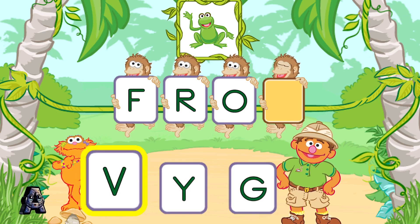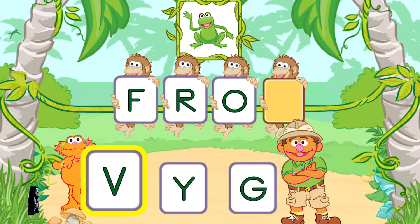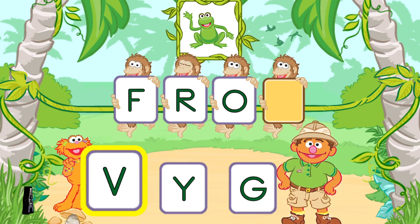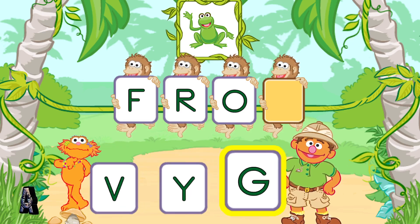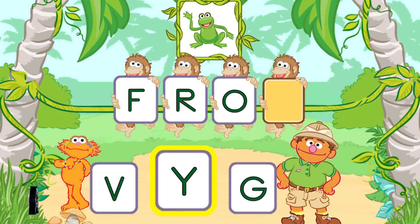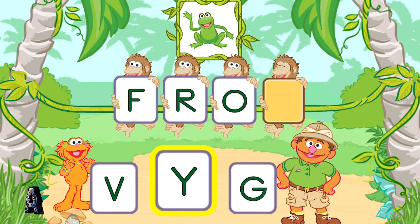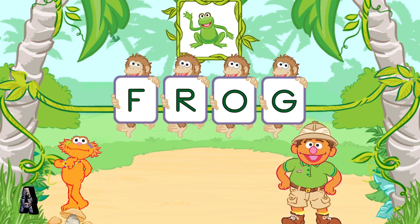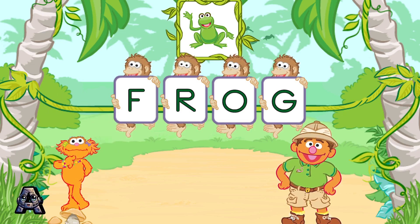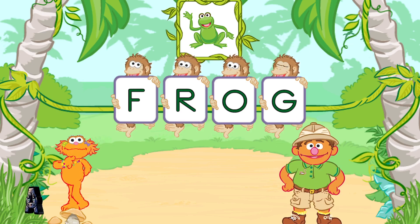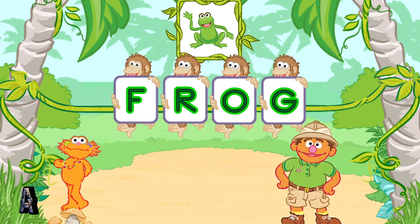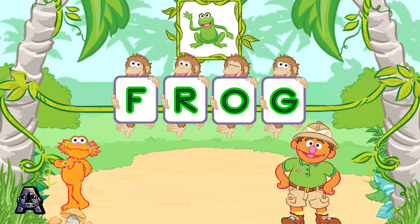Now pick the letter G. Remember, pick the letter G. Way to go! G is the last letter in the word frog. Nice work! Let's see — F, R, O, G. That spells frog. There's one now! You're doing great! Let's make another word.